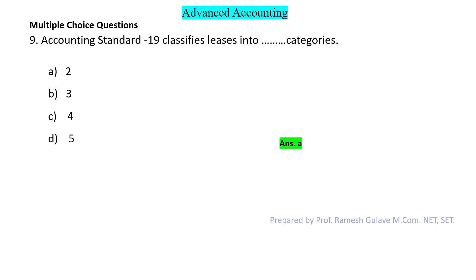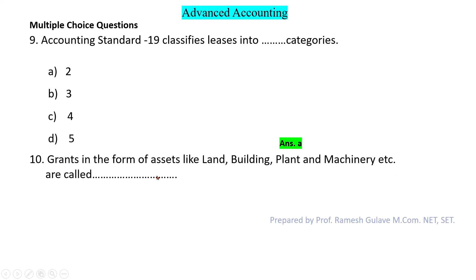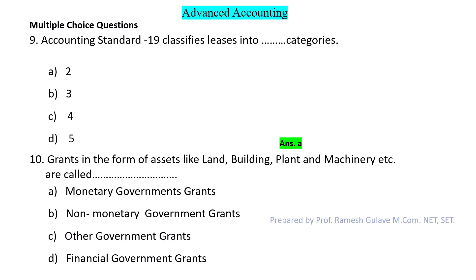Next question: Grants in the form of assets like land, building, plant and machinery are called what? If government grants are received in the form of land, building, or plant — not directly in the form of money — these are non-monetary government grants. So the answer is option B: non-monetary government grants.